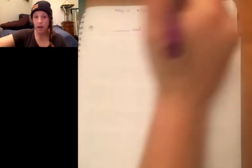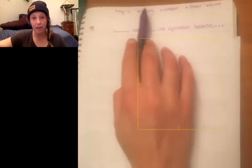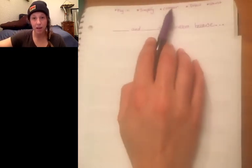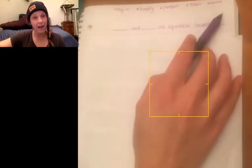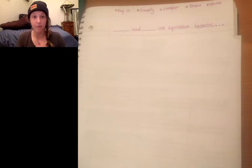The sentence frame is blank and blank are equivalent because dot dot dot. And when you finish this because, I want you to make sure you're using some of these action words: plug in, simplify, compare, draw, or count. Okay. So plug in is when we put numbers in for variables, simplify is when we take something that's very long and we make it shorter using usually PEMDAS or an order of operations.